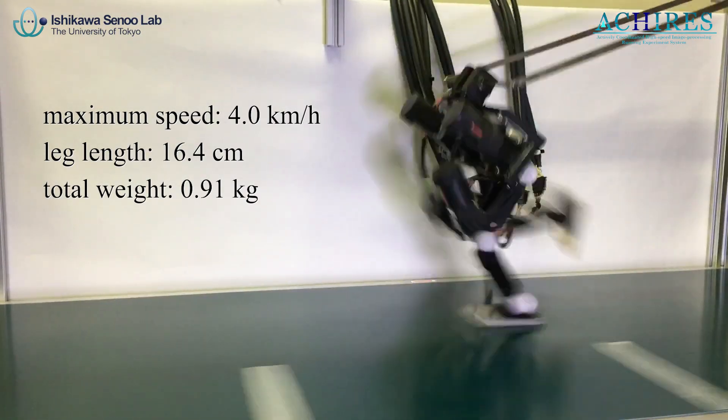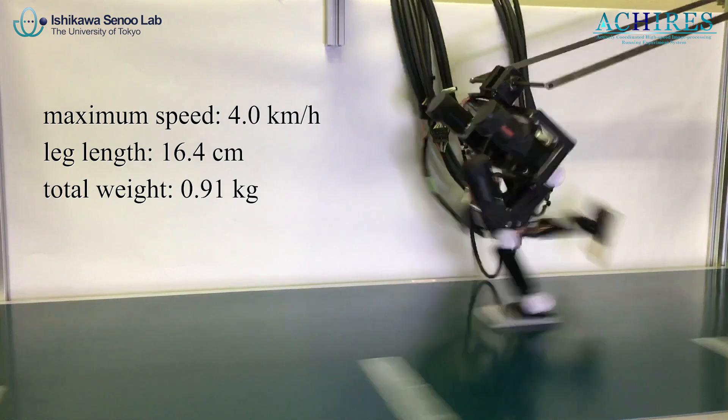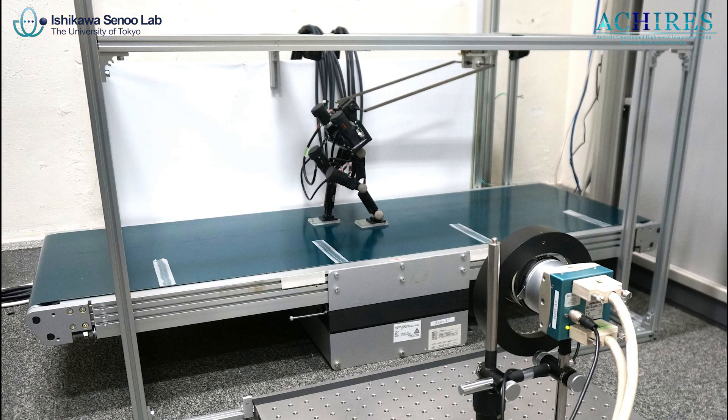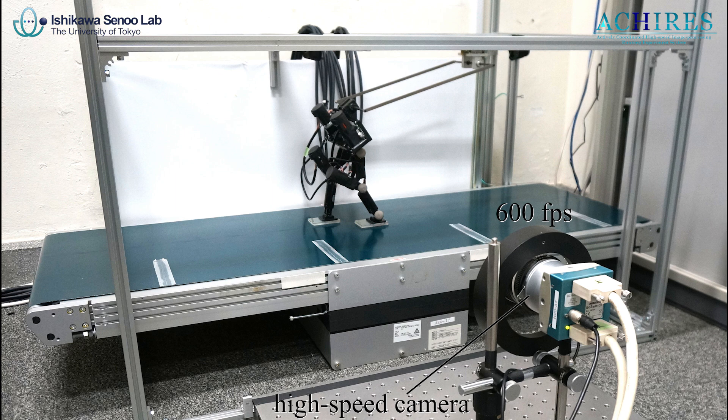ACHIRES is a bipedal robot system that realized running in forward bend posture like human beings. In order to stabilize posture, a high-speed camera is placed on the side of the robot and images the robot at 600 frames per second.